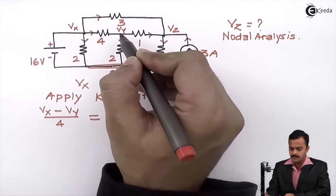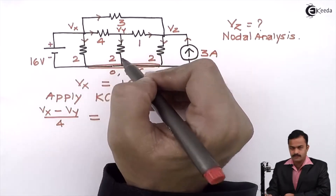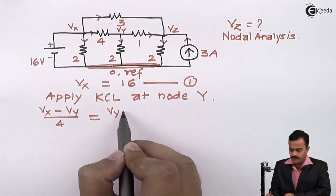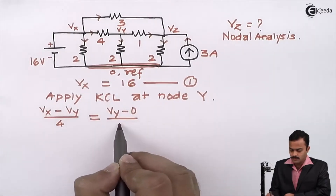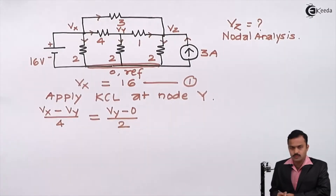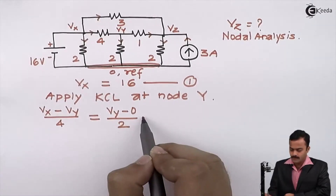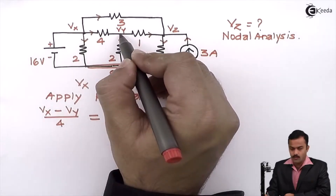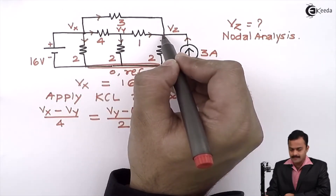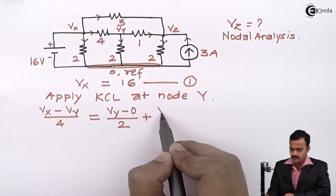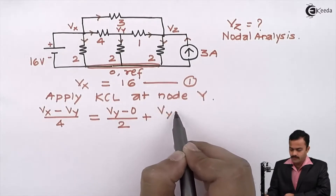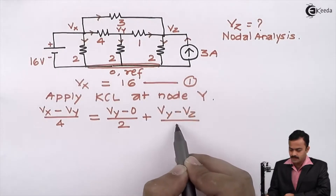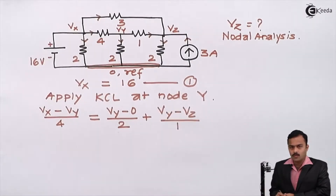This equals the outgoing current: starting at Y and ending on the reference, which is Vy minus 0 divided by 2, plus for the 1 ohm branch starting at Y and ending on Z, which is Vy minus Vz divided by 1.